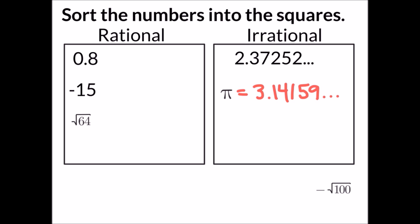And the last number I've asked you to look at is the negative square root of 100. I can simplify that to be negative 10. Therefore, it's an integer, so it is a rational number.